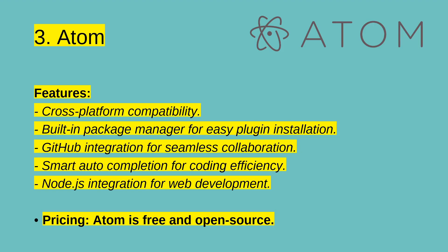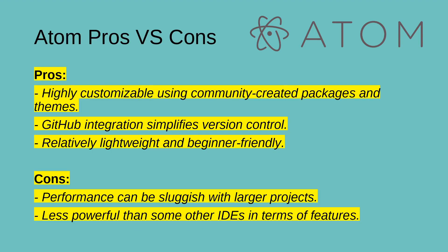Atom is an open-source text editor developed by GitHub. It boasts a highly customizable interface and a vibrant community. Its features include cross-platform compatibility, a built-in package manager for easy plugin installation, GitHub integration for seamless collaboration, smart auto-completion for coding efficiency, and Node.js integration for web development. Atom is free and open source. Its pros include being highly customizable using community-created packages and themes, GitHub integration that simplifies version control, and being relatively lightweight and beginner-friendly. On the other hand, its performance can be sluggish with larger projects, and it is less powerful than some other IDEs in terms of features.